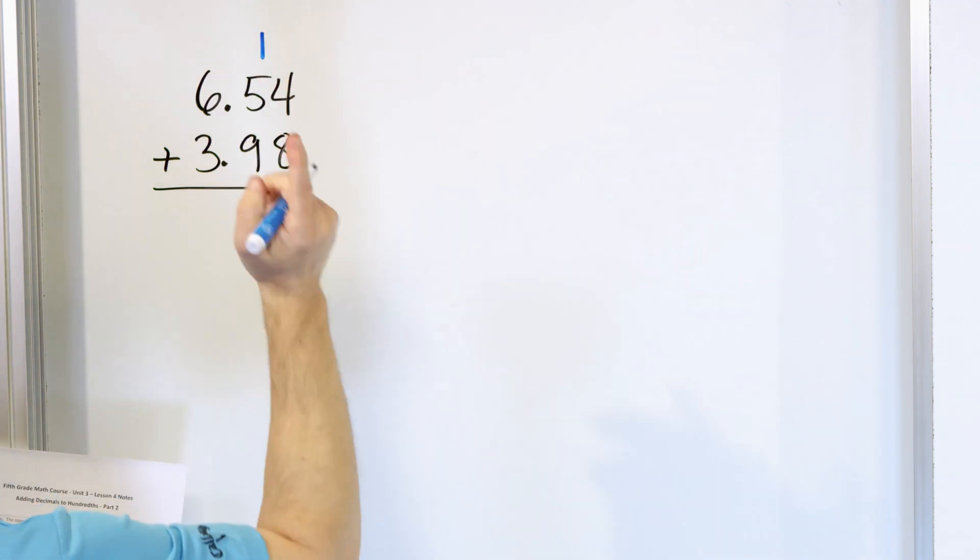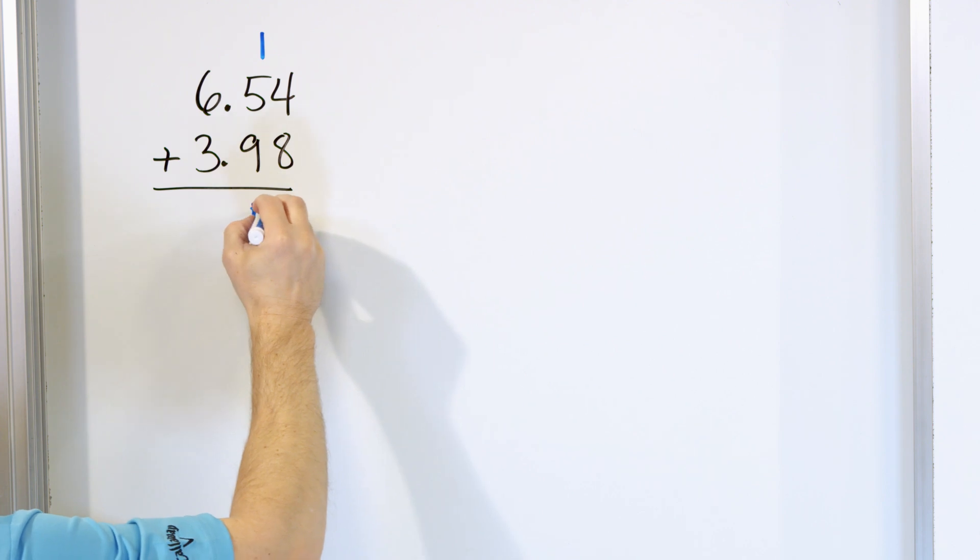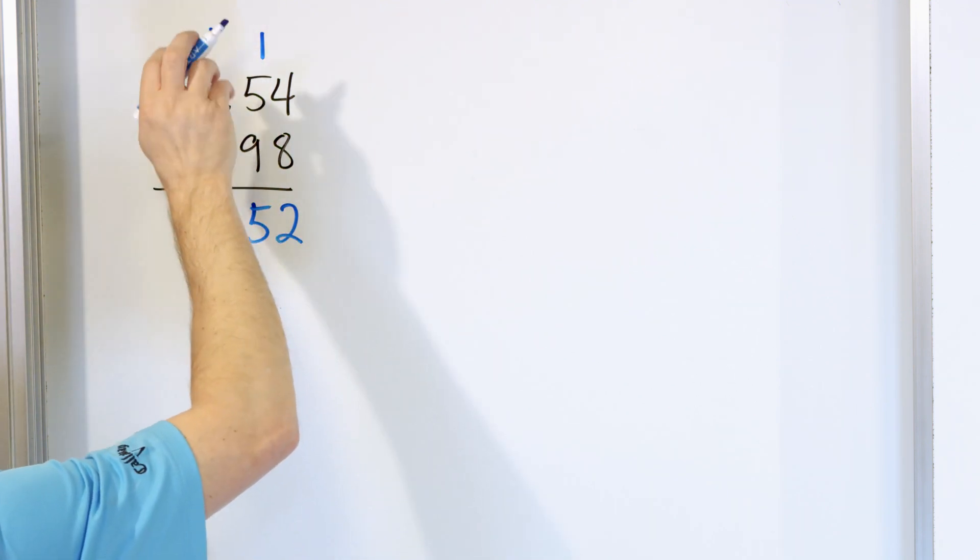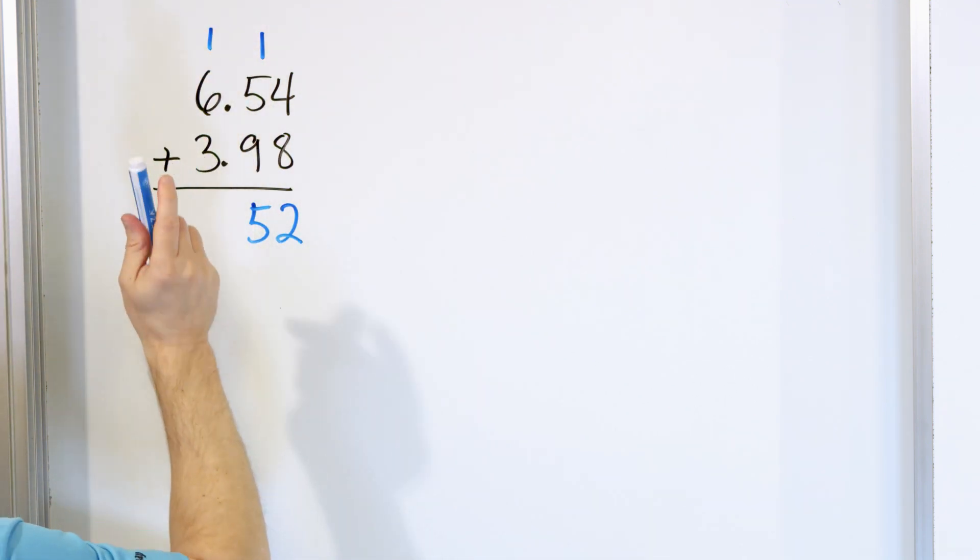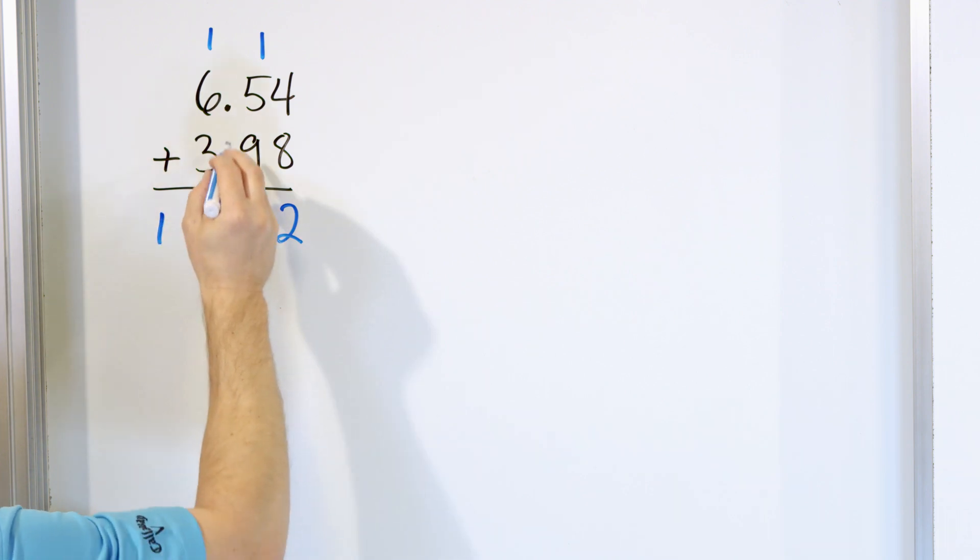Now, 9 plus the 1 is 10, 10 plus the 5 is 15. So put that 5 there, carry a 1. 6, 7, 8, 9, 10 means we put the 10 right here. And the decimal just falls right out of the problem, 10.52.